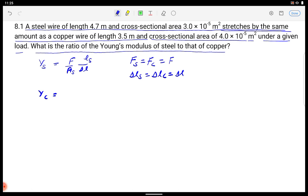अगर मैं copper के लिए निकालूं तो copper के लिए F by A C into L C upon डेल L आ जाएगा तो यहां से पूछा है what is the ratio of Young's modulus of steel तो अगर मैं Y S by Y C करता हूँ.